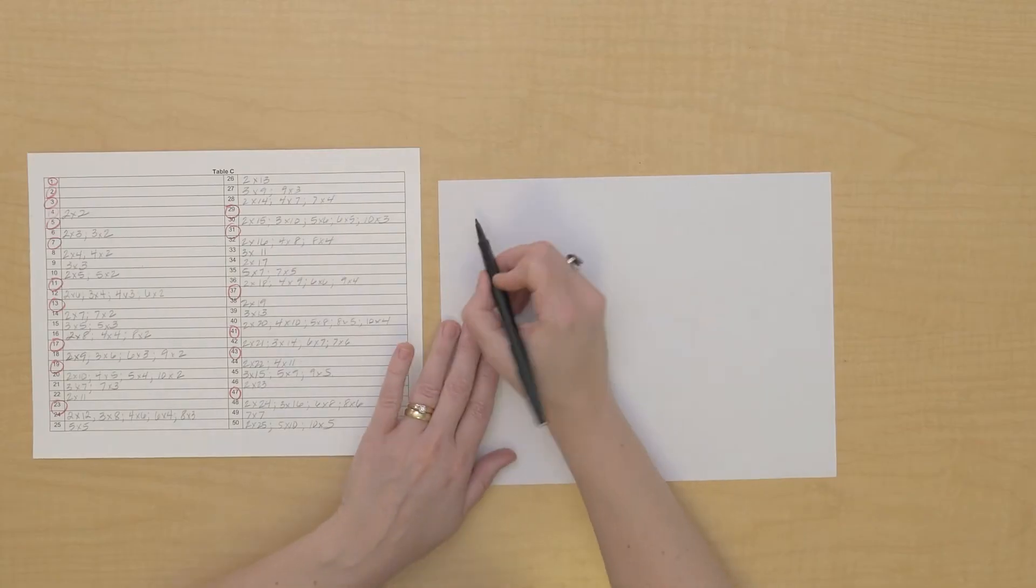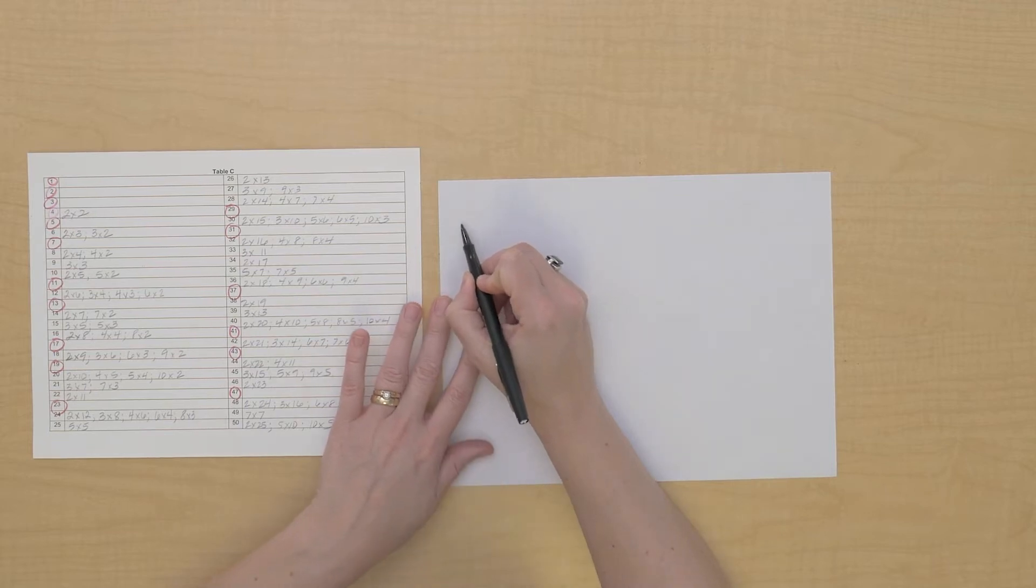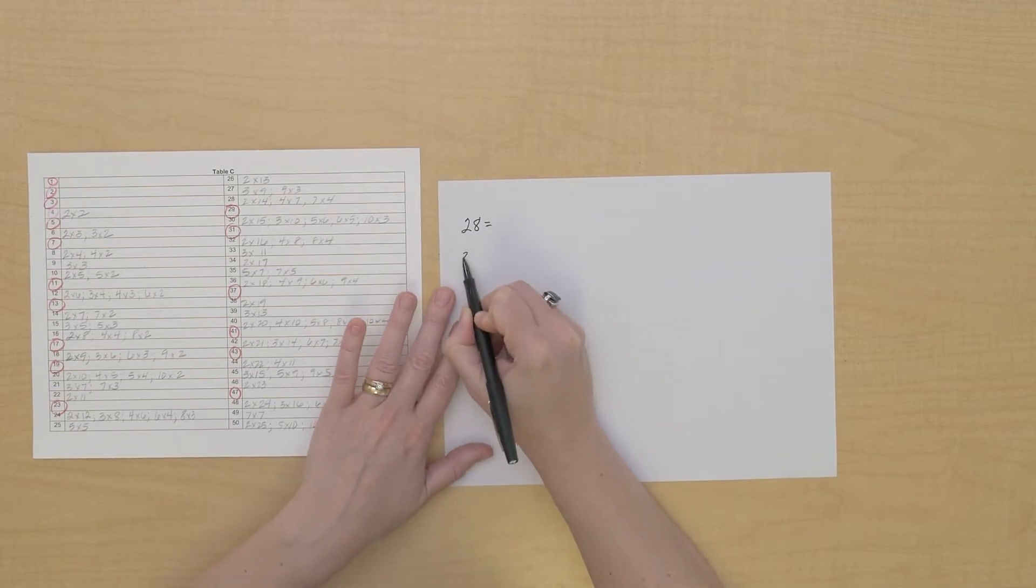We can also use table C to help us find the highest common factor. First we're going to break numbers down into prime factors. I'm going to take a look at the numbers 28 and 36.